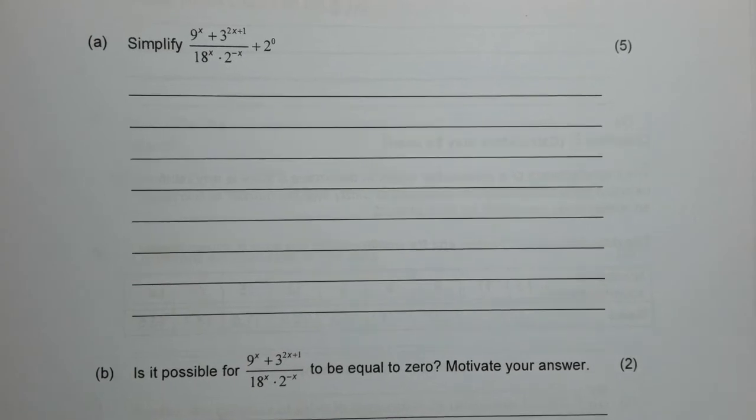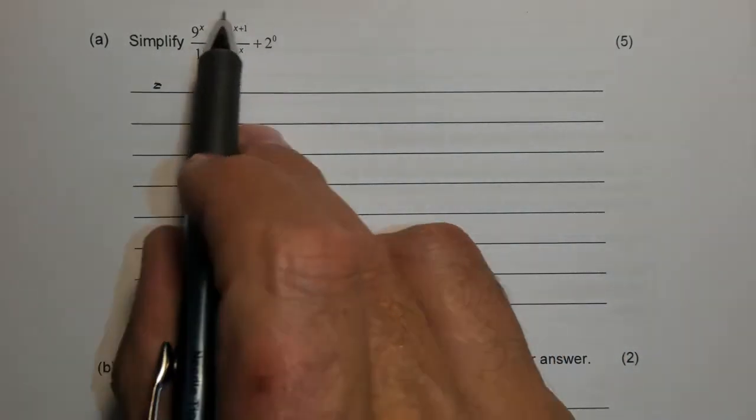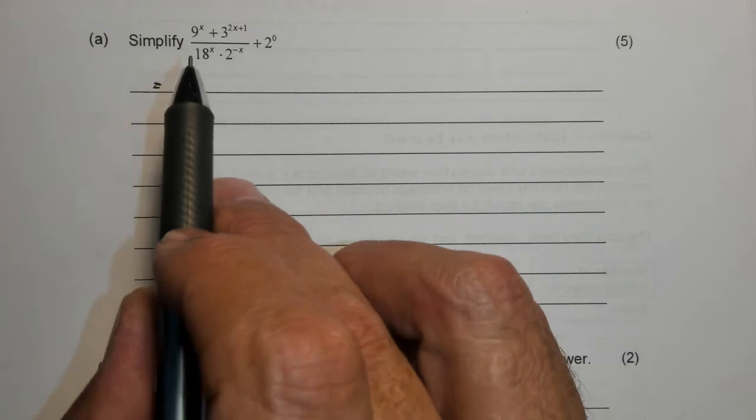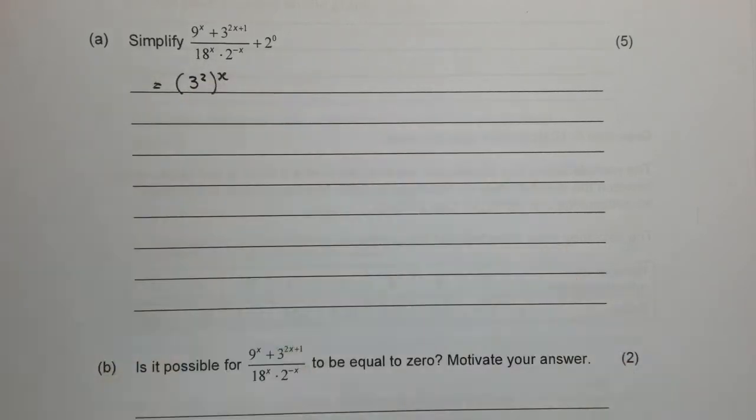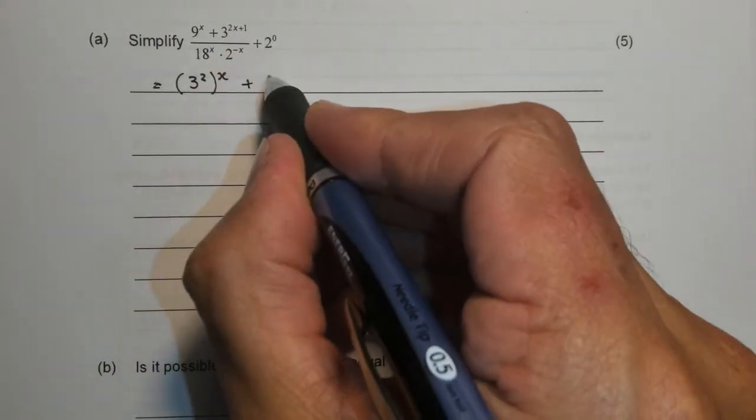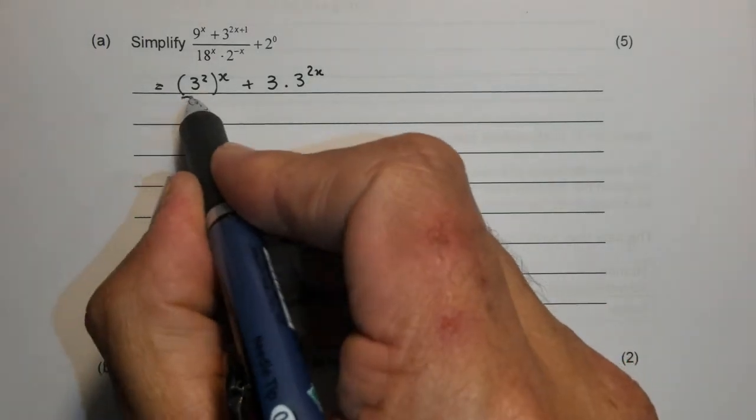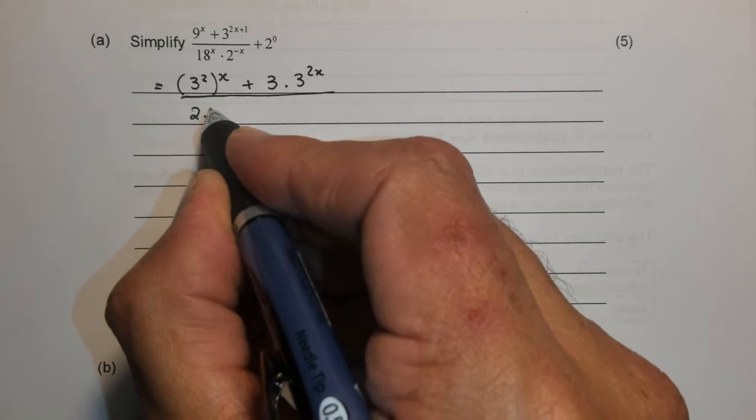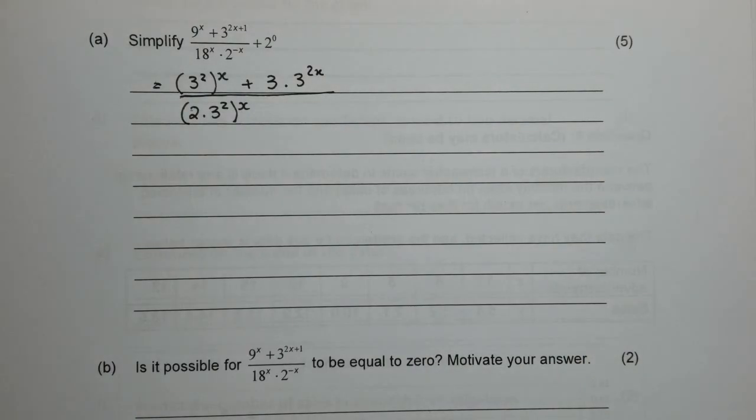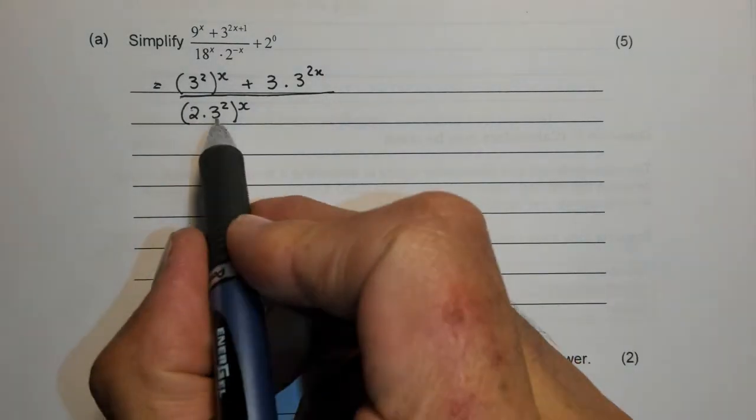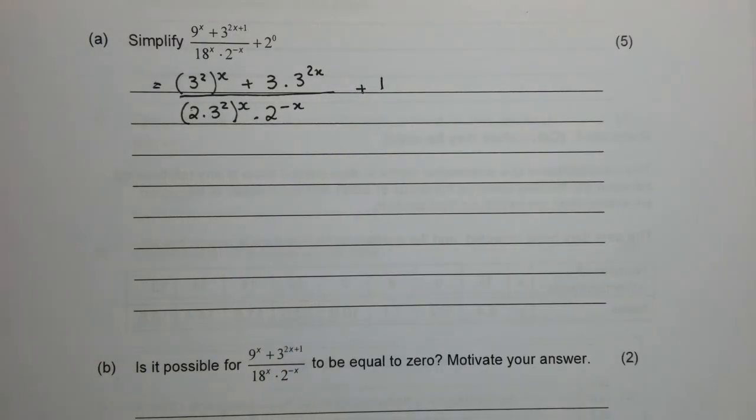Question 3 for 5 marks says simplify. So let's break it up again. Now remember if you simplify something that looks like this you have to use brackets. So I'm going to say that 9 is 3 squared to the power of x plus this I'm going to break up into 3 to the power of 1 multiplied by 3 to the power of 2x. In the bottom I've got 2 times 9 so 9 is 3 squared times the 2 gives me the 18, both those bases are raised to the power of x, times 2 to the minus x plus 2 to the 0 and 2 to the 0 is 1.